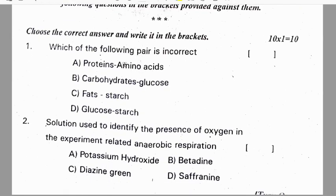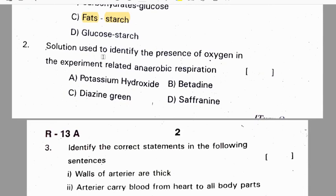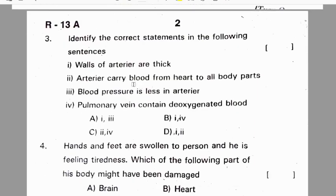Now we will discuss Biological Science Part B. First question: which of the following pairs is incorrect? Proteins-amino acids is correct, carbohydrates-glucose is correct, glucose-starch is correct, but fat-starch is a wrong statement — so correct option is C. Second question: which solution is used to identify the presence of oxygen in the experiment related to anaerobic respiration — dyes in green.